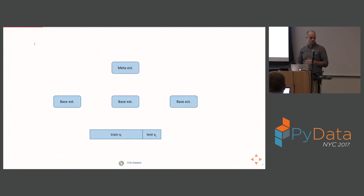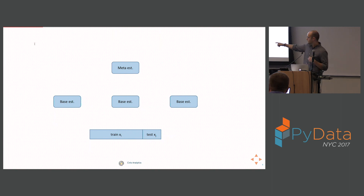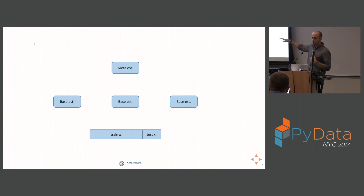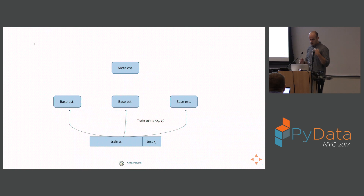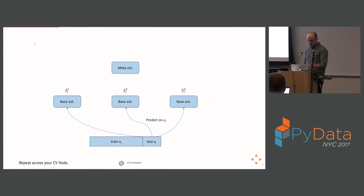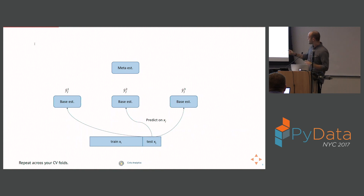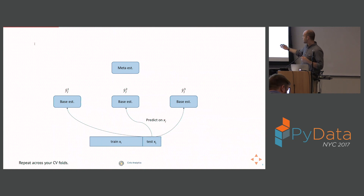Let me go through a cartoon to show you in more detail what a stack model looks like. At the bottom I have my dataset split into a train and test fold. I have three base estimators — you can have any number, you probably want more than one — and then a meta-estimator at top. Just like when you're doing model selection, you train all your base estimators on the training fold, then make predictions on the test fold, the out-of-sample set.